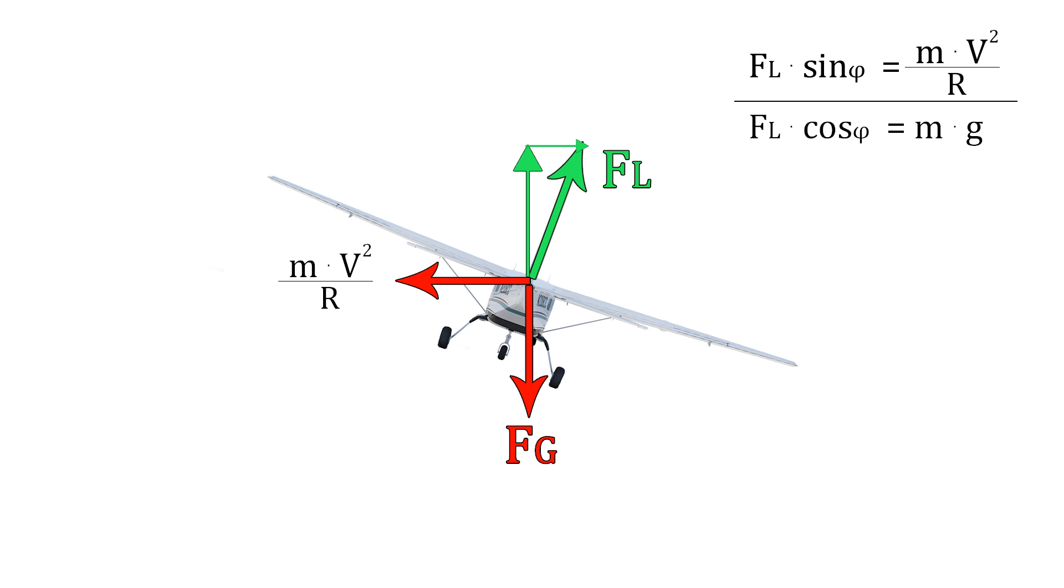If we divide these two equations, the FL would cancel each other out, and so would the mass. We'd be left with sine over cosine phi, which is tangent phi, that is equal to V squared over GR, where V is the speed of the aircraft, G the gravitational force, and R the turn radius.